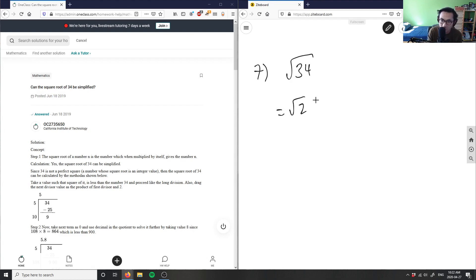So we take out two here, we get root 2 times root 17, and 17 here is our prime number. So in this case we can't simplify this anymore.